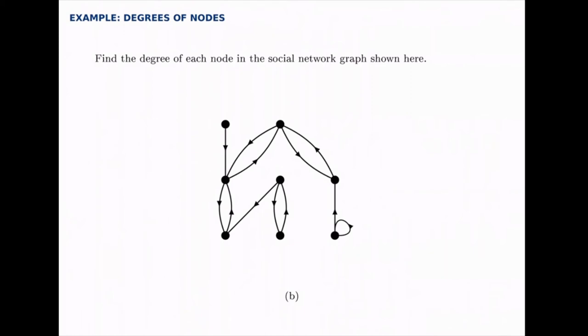Now here's a directed multigraph, and we're going to count degrees again. Now the difference here is that with a directed graph, there isn't just one degree for each node. Instead, there's a degree that counts how many edges come into that node, and how many edges go out. And appropriately enough, we call these the in-degree and the out-degree.